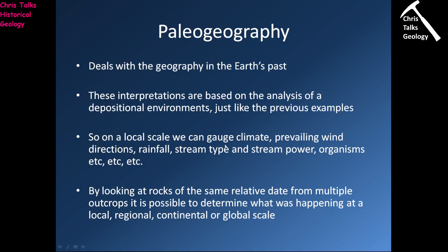On a local scale, we can gauge climate, prevailing wind directions, rainfall, stream type, stream power, organisms, and so on — just by looking at one outcrop, we can get this kind of general information. However, by looking at rocks of the same relative age from multiple locations, it's possible to determine what was happening at a local, regional, continental, or even global scale, giving us a really good handle on what was going on in the larger system.